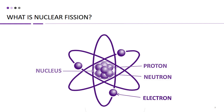In nuclear fission, a heavy nucleus, such as uranium-235, absorbs a neutron, becomes unstable, and splits into two or more smaller nuclei, along with the release of additional neutrons and a significant amount of energy.